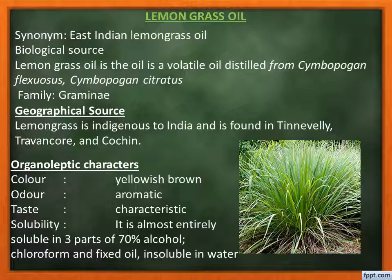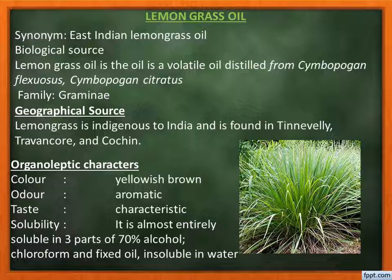Lemongrass oil, synonym: East Indian lemongrass oil. Biological source: lemongrass oil is the volatile oil distilled from the fresh or partially dried leaves of Cymbopogon citratus, belonging to the family Gramineae. Lemongrass is indigenous to India.